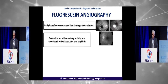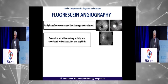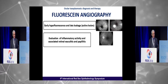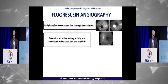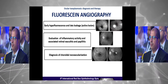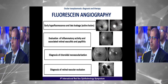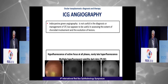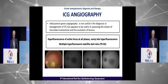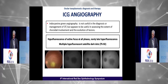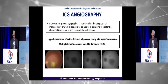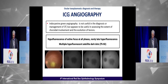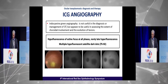On fluorescein angiography, active lesions show early hypofluorescence and late hyperfluorescence. FA is useful for evaluating the activity of retinochoroiditis, associated retinal vasculitis and papillitis, diagnosis of choroidal CNV, and diagnosis of associated occlusive retinal vasculitis. ICG angiography is not necessary in ocular Toxoplasmosis, but can show hypofluorescence of the active focus at all phases, with multiple hypofluorescent satellite dark dots in up to 90% of cases.